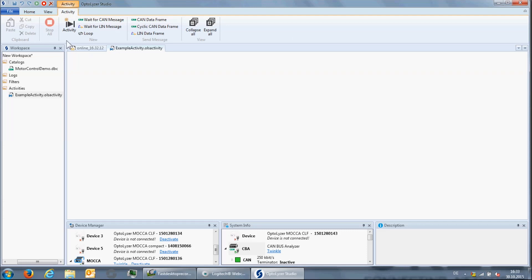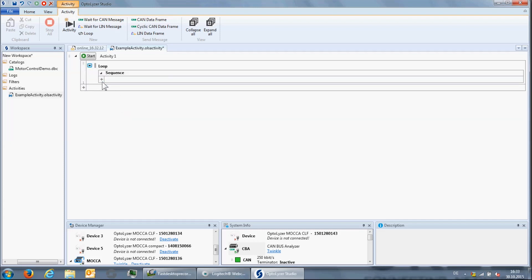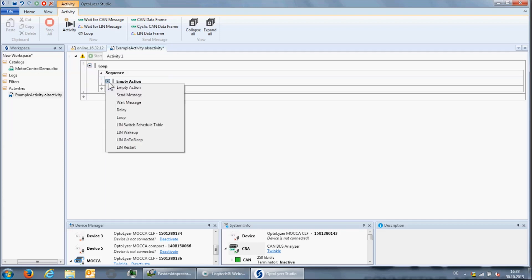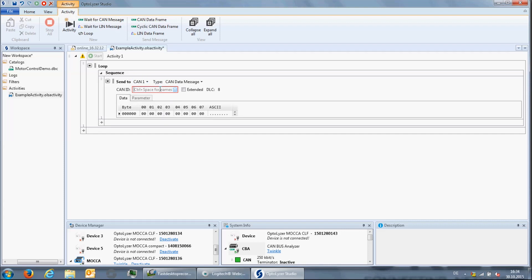Activities implementing complex timing behaviors can be created graphically in the activity view. In order to send a control message repeatedly, one can select a loop which contains a sequence. In this sequence, we add a message to be sent, select the interface that is used to send out the message, the message ID and set the payload.